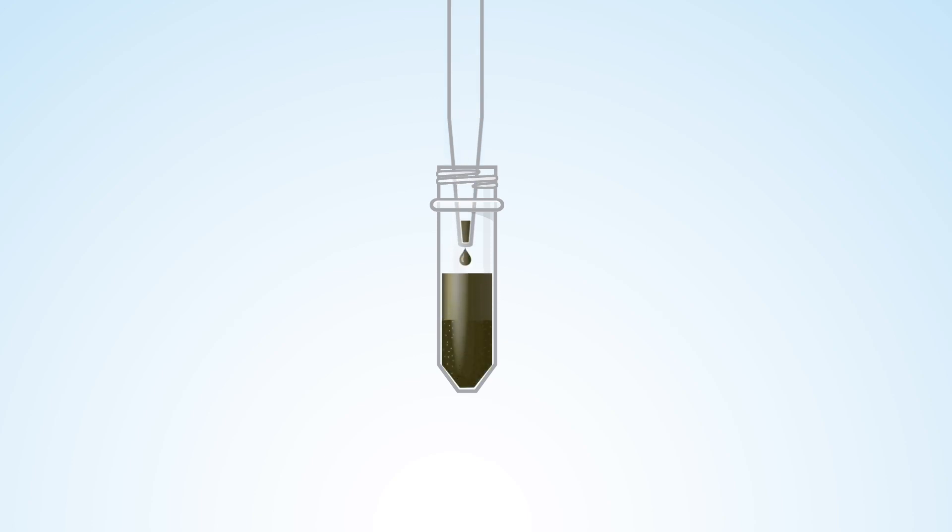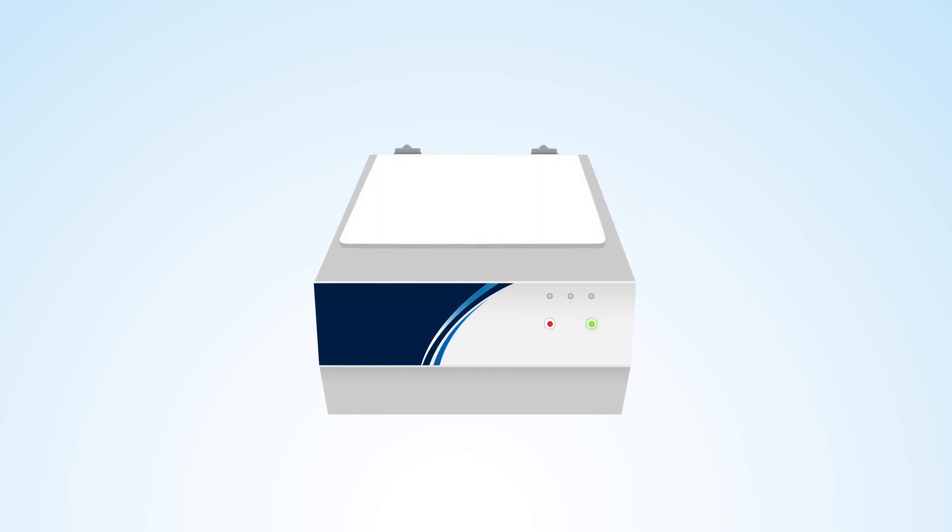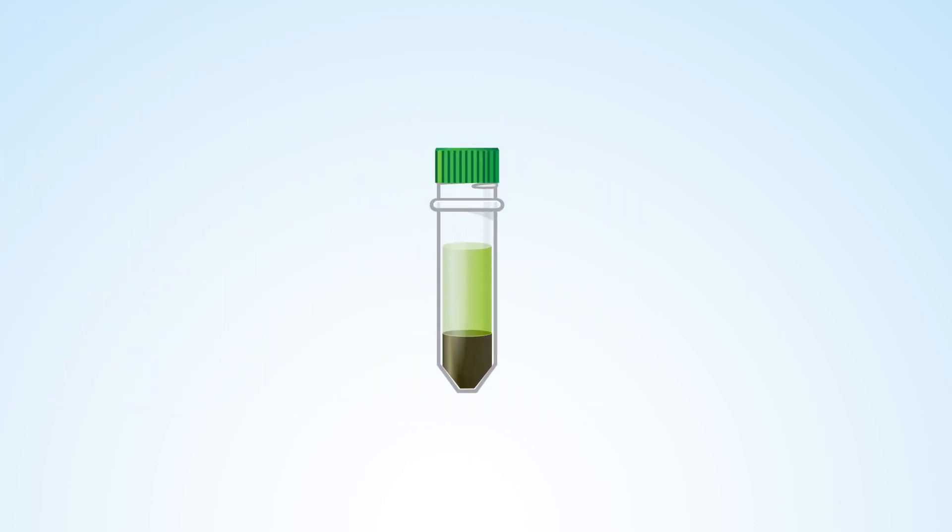Add your supernatant to the DSPE tube, shake vigorously, and then place it into a centrifuge. Once centrifugation is complete, transfer the supernatant into an auto-sampler vial and make any final adjustments required for your sample.